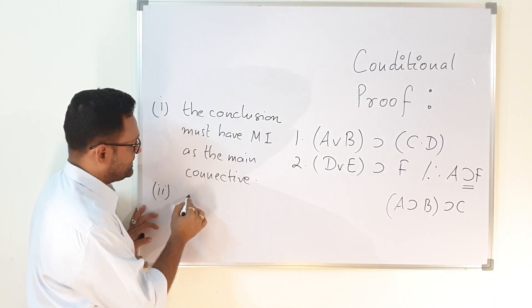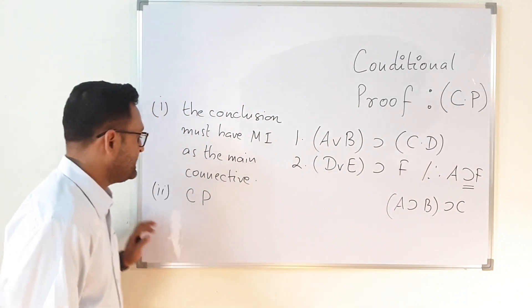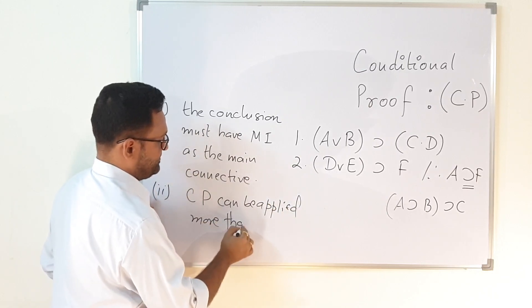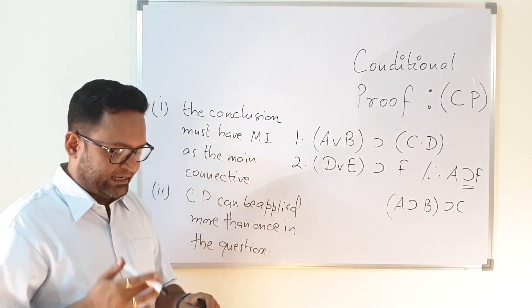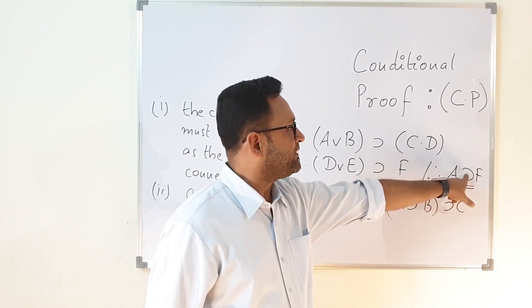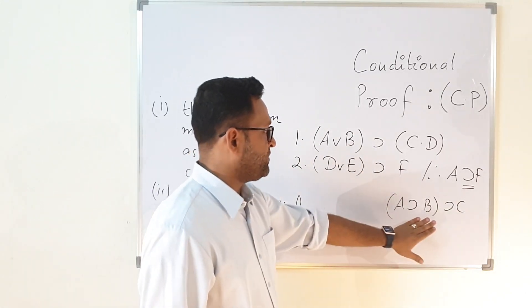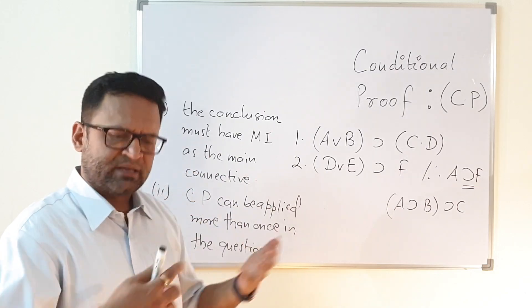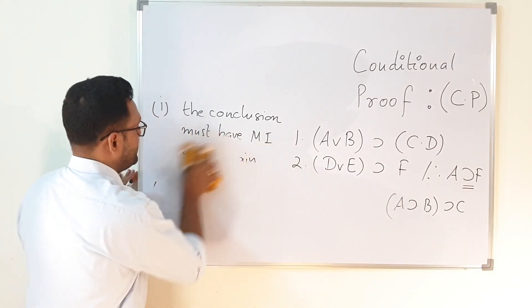The short form of conditional proof is CP. CP can be applied more than once in a question. Two things to remember: first, CP can be applied only when you have material implication as the main connective in the conclusion. Second, if after applying CP once there is a requirement to apply it again, you can do so. We will explore this with the help of examples.